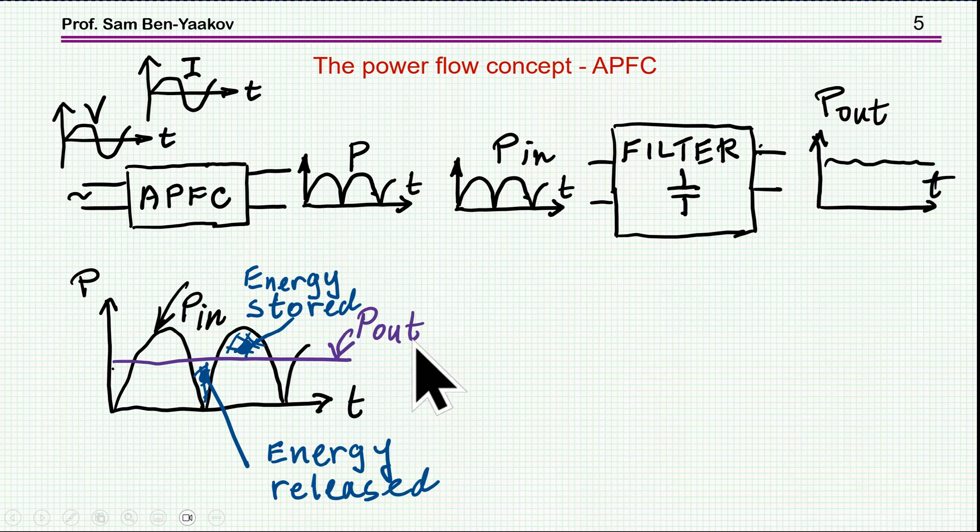So you need somehow a filter to filter out this power such that the output would be about constant. You may tolerate some ripple on it, but certainly this pulsating power is not useful. So the need is somehow to smooth out the power, and this is done by a capacitor that is storing energy when there is excess energy from the input. This is the output that you need. This is the input, so there is an excess energy here. And then when there is no sufficient energy coming from the input, the capacitor is actually supplying this energy. So the function of the filter here is to store energy when there is an excess and release it when it is required.